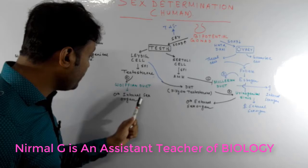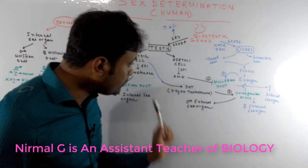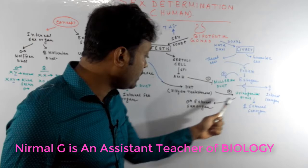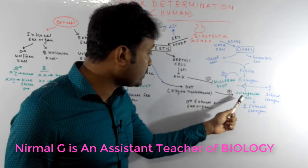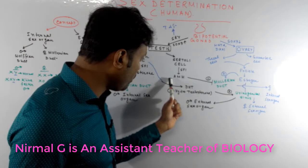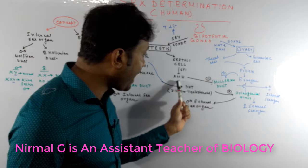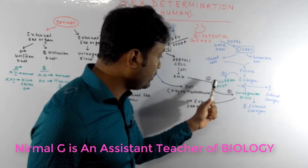Testosterone acts upon the Wolffian duct and activates it for further development. The Wolffian duct is responsible for the development of the male internal sex organs: the epididymis, vas deferens, seminal vesicles, and prostate. Dihydrotestosterone (DHT) acts upon the urogenital sinus, causing the development of the male external sex organs — the penis and scrotum.